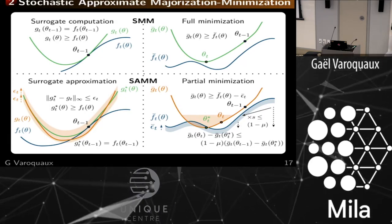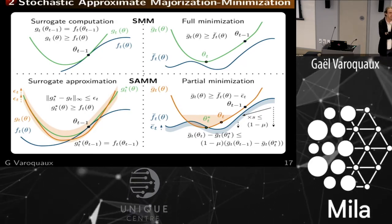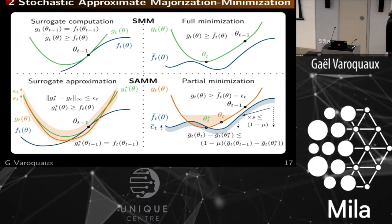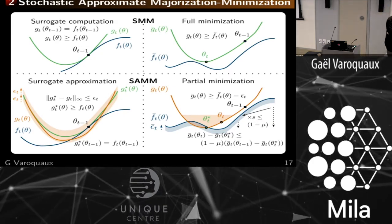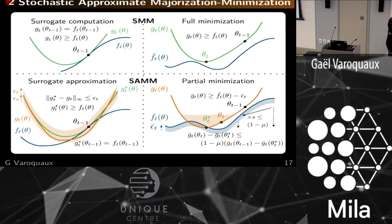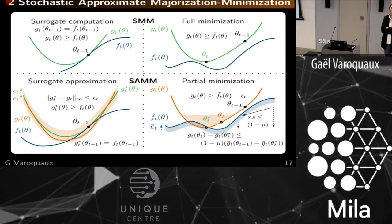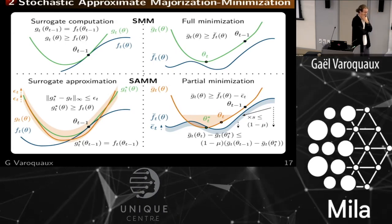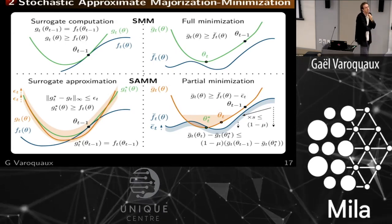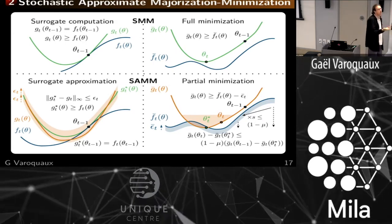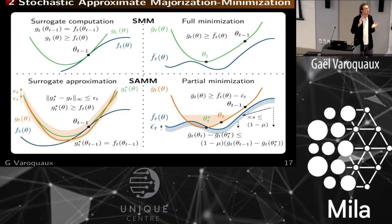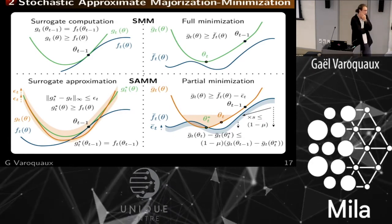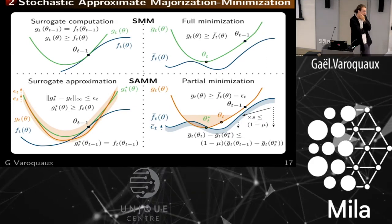SGD is catastrophic for this setting because it contains no form of memory whatsoever. Intuitively, adding a memory term would help — but then the challenge is tuning this memory term to how fast your distribution changes.